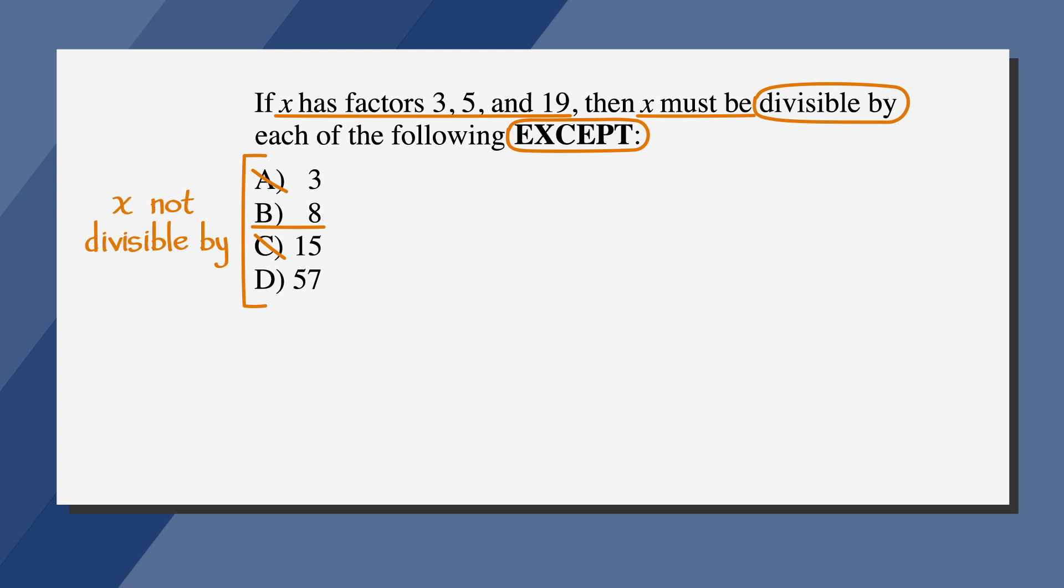Before we move on, let's just look at one more way of approaching this answer choice without a calculator. Since 3 and 5 are both factors of 285, 3 times 5, or 15, will also be a factor. So 285 will be divisible by 15. You don't have to do any division. You can just cross off C.